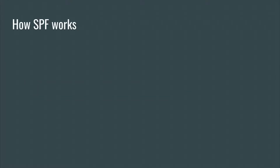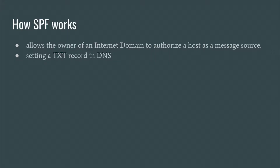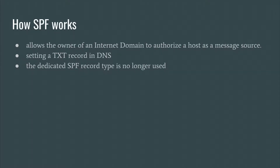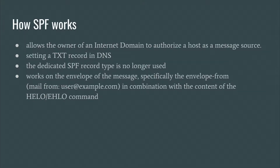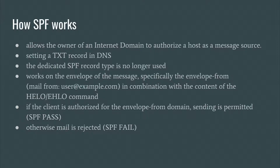So how does SPF work? It allows the owner of a domain to specify which hosts are allowed to send email for that domain. It does so by setting a TXT record in DNS. There used to be a dedicated SPF record type, but if you still use it, it has been deprecated in the last RFC, so you probably should not use it anymore. It works on the envelope level of the message — the HELO command and the MAIL FROM command. If the receiving mail server reads the SPF record from DNS and sees that the sending mail server is authorized to send that message, it will pass the message. Otherwise it will fail the message and it will be rejected with an error reply.